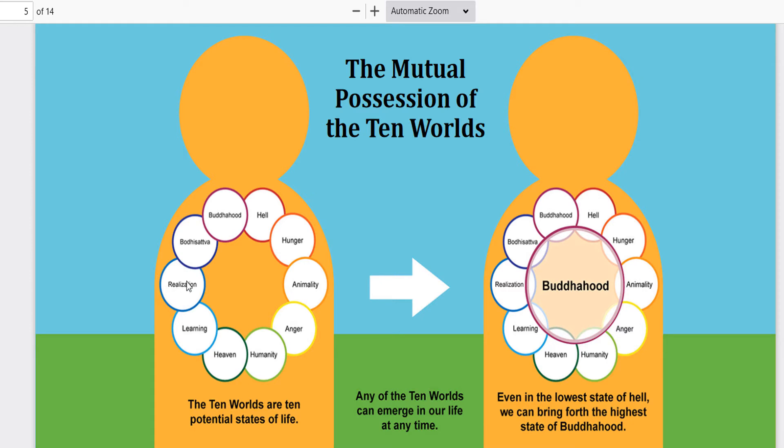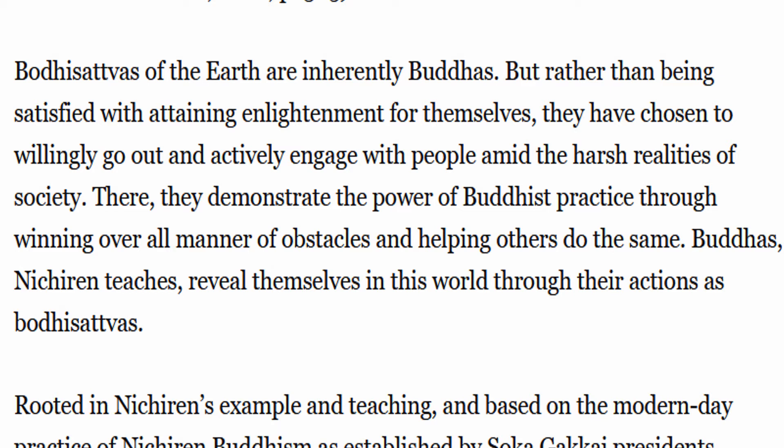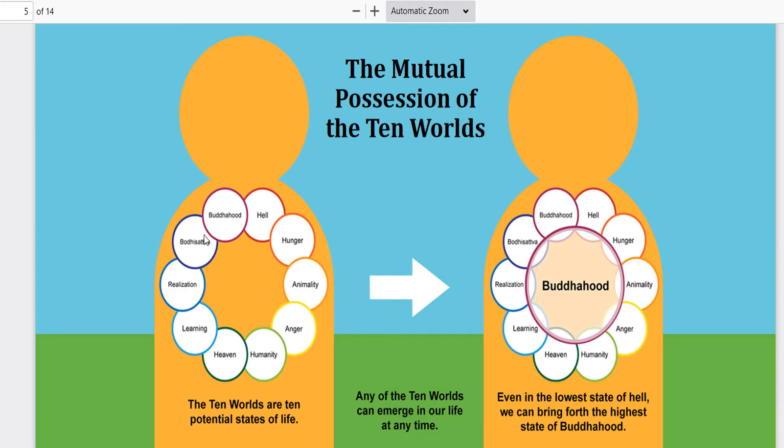That's basically what I realized when I moved through these realms and got to the realization part. The definition of Bodhisattva of the Earth: they are inherently Buddhas, but rather than being satisfied with attaining enlightenment for themselves, they have chosen to willingly go out and actively engage with people amid the harsh realities of society. There they demonstrate the power of Buddhist practice through winning over all manner of obstacles and helping others to do the same. Even in the lowest state of hell, we can bring forth the highest state of Buddhahood by chanting Nam Myoho Renge Kyo.